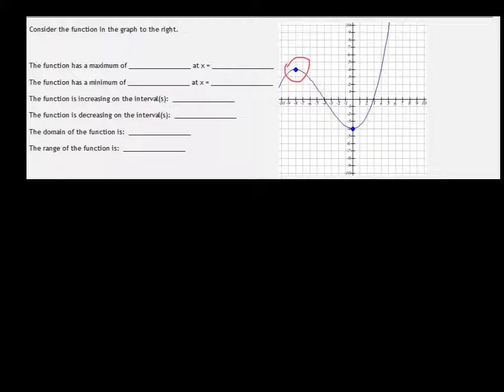So the function has a maximum, now the maximum is actually 4 and the x value where that maximum is, is negative 8.